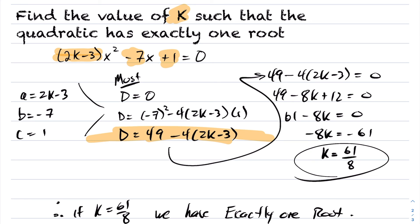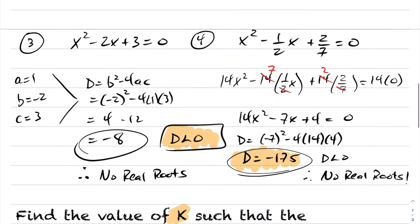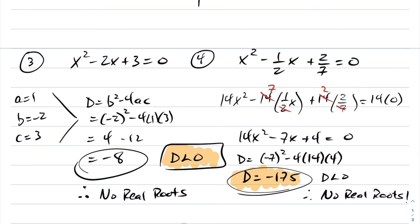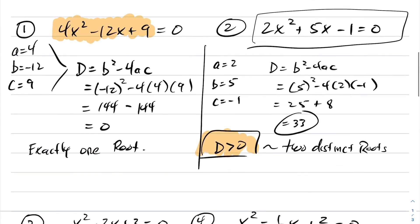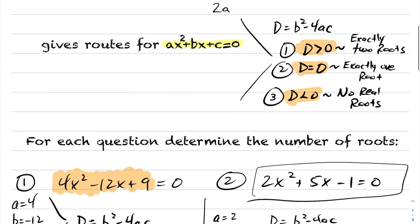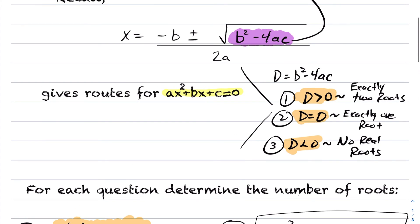That concludes our lesson on the discriminant. To summarize: the discriminant is a way to determine the type of roots a quadratic has without going through the entire quadratic formula. You quickly calculate the discriminant, check whether it's greater than zero, equal to zero, or less than zero, and from that determine whether you have two roots, exactly one root, or no real roots.